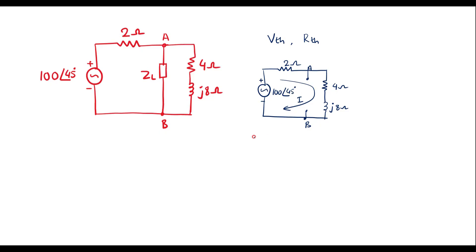So now I can apply KVL to this loop that is 100 angle 45 is equal to 2 plus 4 plus J8 I. That is 100 angle 45 is equal to 6 plus J8 I. So therefore I can write current I is equal to 100 angle 45 divided by 6 plus J8. So this value can be calculated directly using calculator, keep calculator in complex mode. So it gives 9.89 minus J1.414. So while calculating make sure that calculator is in degree mode.